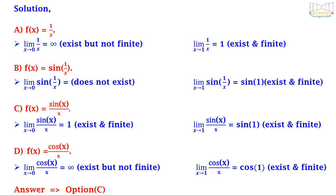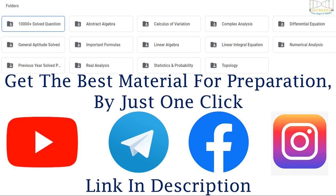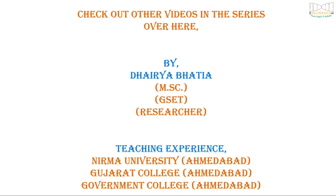The correct answer for Example 5 is option C. You might have noticed that all the questions were asked on the interval (0,1) — only the options were changed — so have good practice of this type of question. Also get the best material for preparation by just one click; the link is given below in the description. Thank you, and check out other videos in the series.